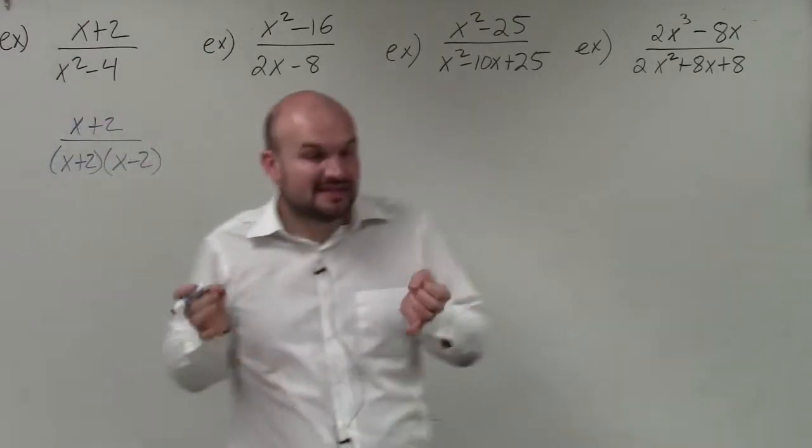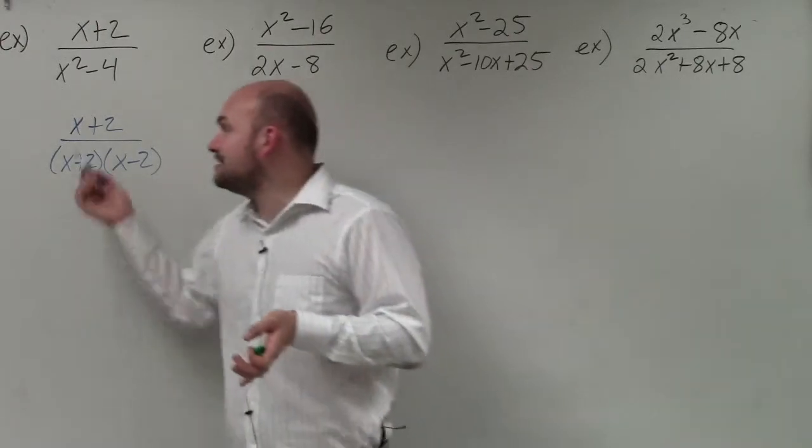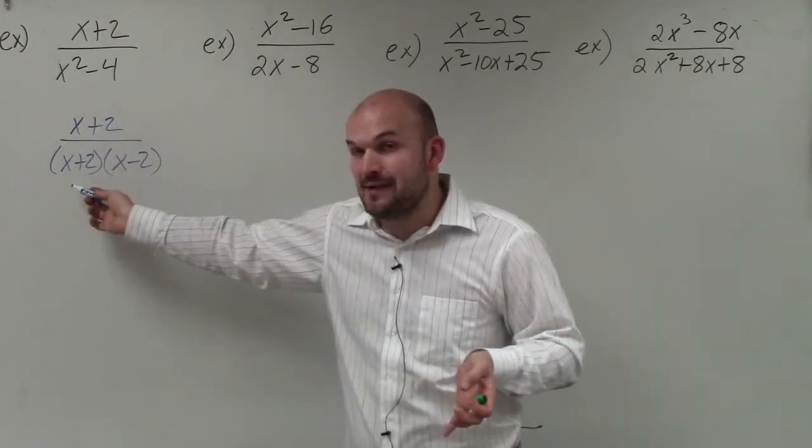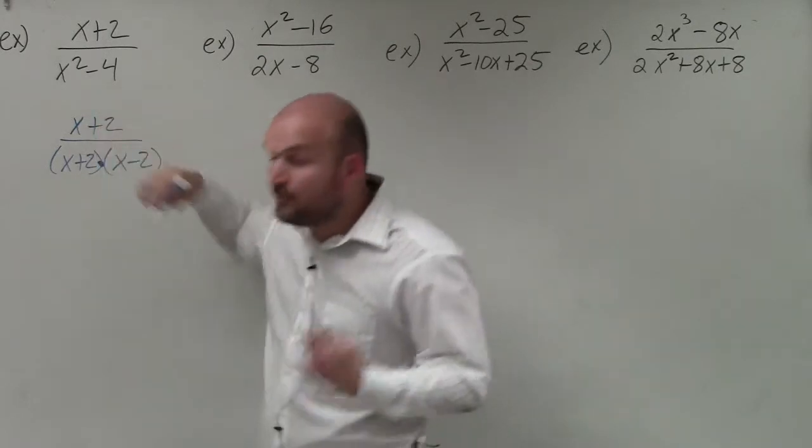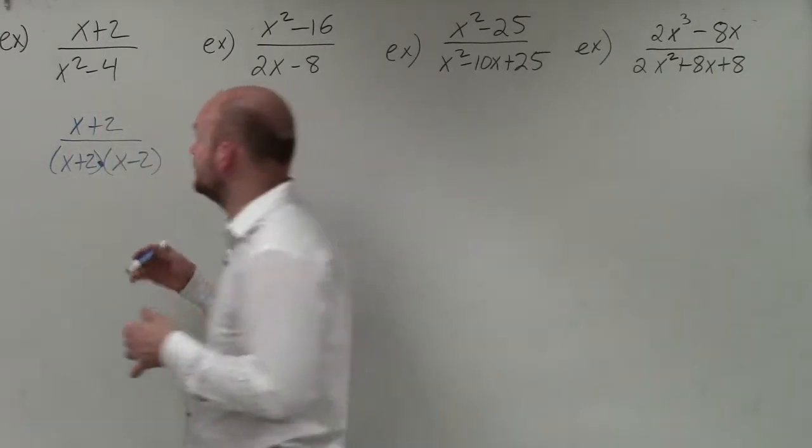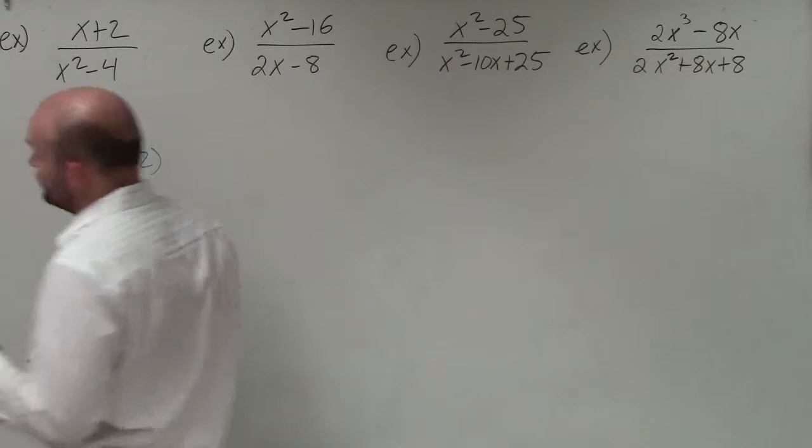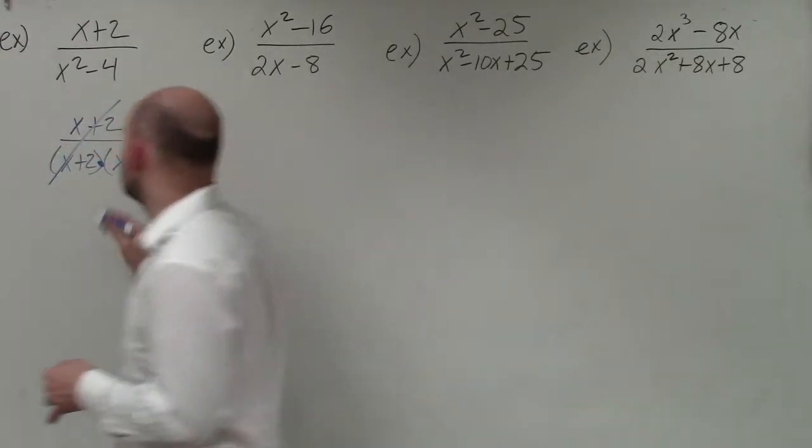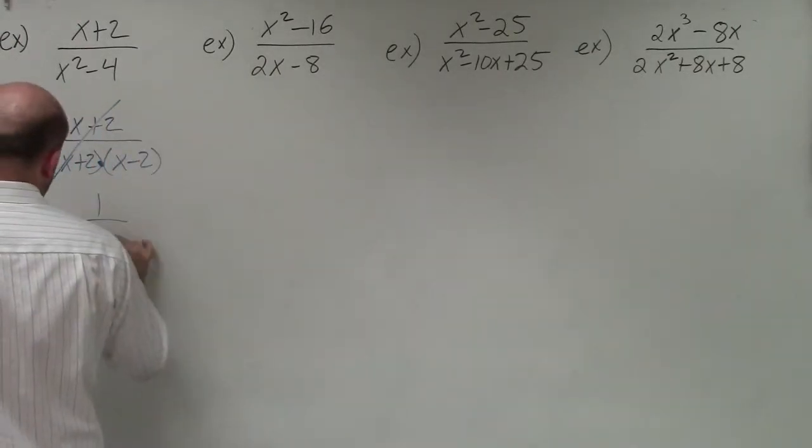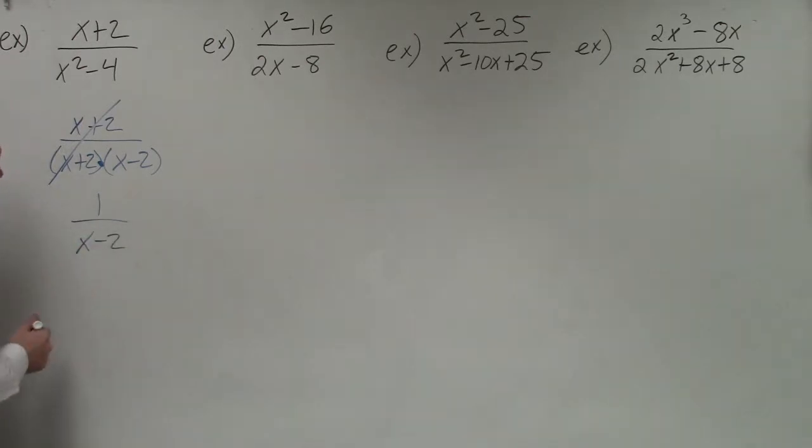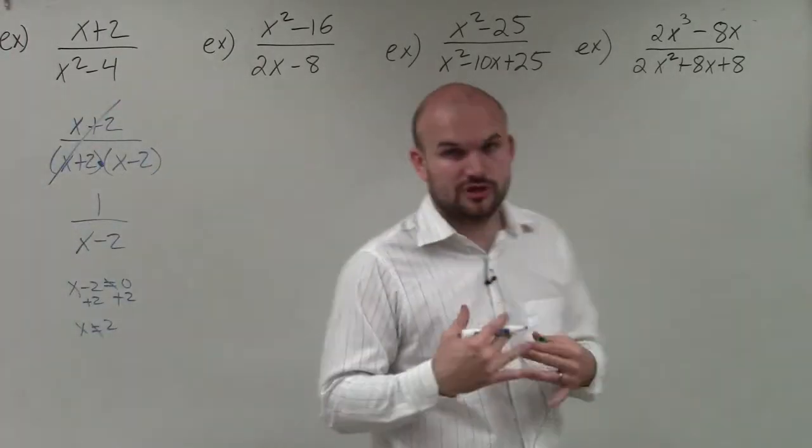And now you can see that the expression x plus 2 is the same in the numerator, as well as the denominator. And since in the denominator, it's separated by multiplication, I can apply the division property. So therefore, those are going to divide to 1, and I'm just going to be left with 1 over x minus 2. Now, when we write it now, if I want to write my constraints, I can say x minus 2 cannot equal 0. So the values that x minus 2 is going to equal 0 is going to be at 2. So I'll say my constraint is going to be x cannot equal 2.